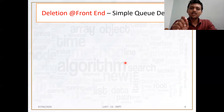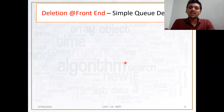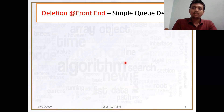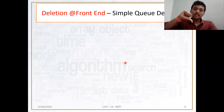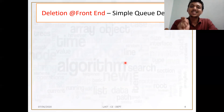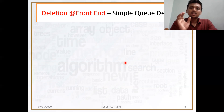What is the first step? Can anyone remember what is the first step of simple queue deletion algorithm? In each and every deletion algorithm, we first need to check the underflow condition. Underflow condition means whether the data structure has elements or not. I am saying data structure — not queue, not stack — because underflow condition is a generalized term.